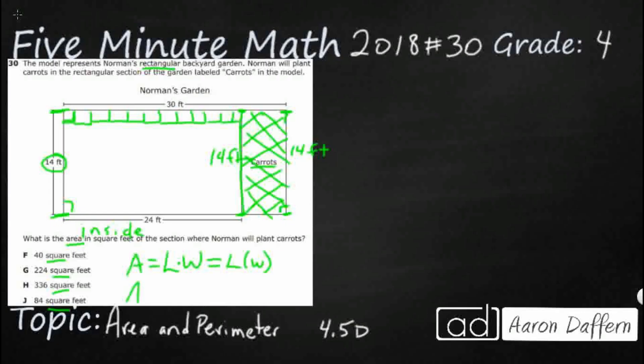So we've got one of our measurements here, 14 feet, but we need to figure out what that width is. Now what we could do is we can say well if the entire top from side to side is going to be 30 feet but then the bottom all the way up to the carrots is 24 feet, this almost looks like a part-part-whole.